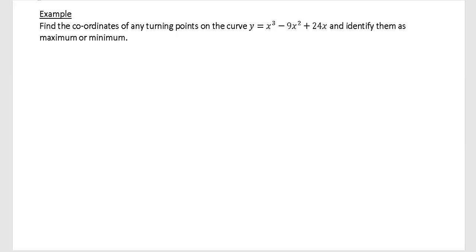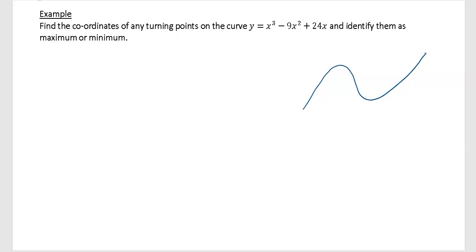In this video we're going to find maximum and minimum points, also called stationary points or turning points, using differentiation for cubic functions. As a reminder, this curve is y equals x cubed minus 9x squared plus 24x. It's a positive cubic, so it has a general shape that goes up and down, meaning you'd expect to find both a maximum and a minimum turning point.